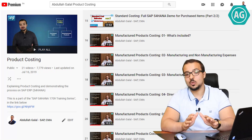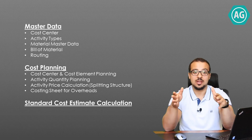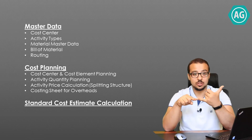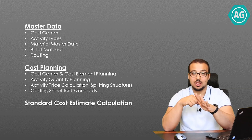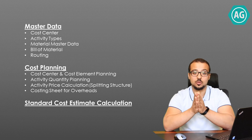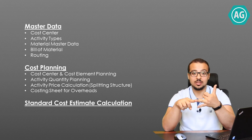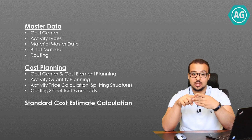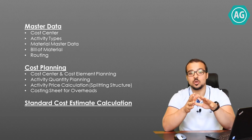This demo is going to include everything I've explained so far in this playlist and will include multiple sections. In the first section I'm going to explain the master data: cost center master data, activity types, material master data, bill of material, and routing. Then I'll move to the second section covering cost planning: cost center cost element planning, activity type quantity planning, activity type output price calculation using the cost splitting structure, and costing sheet creation for overheads. The last step is the standard cost estimate calculation for our product.